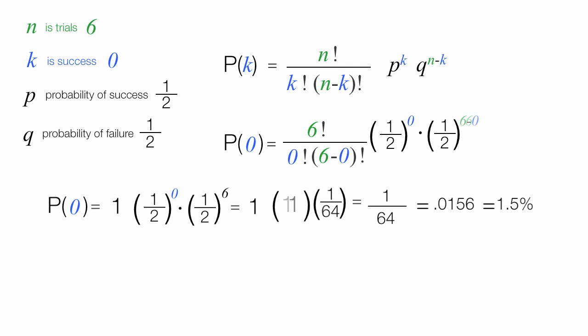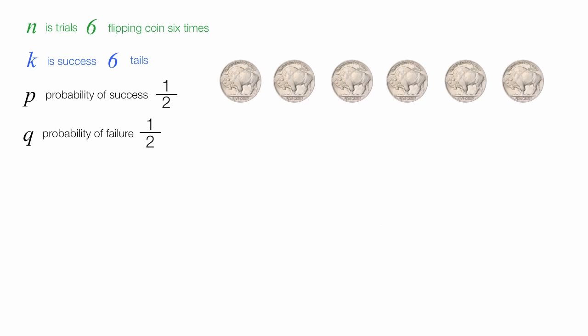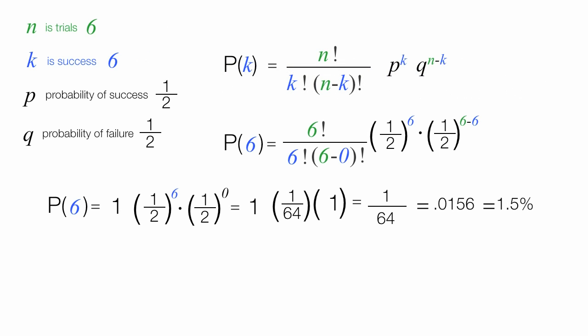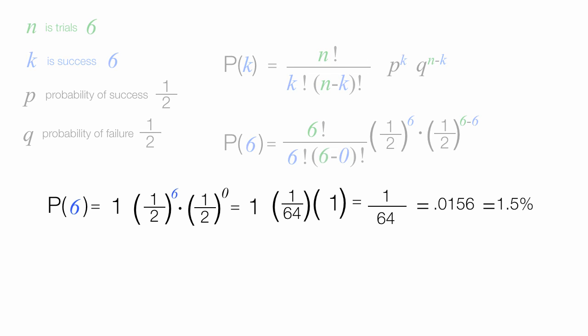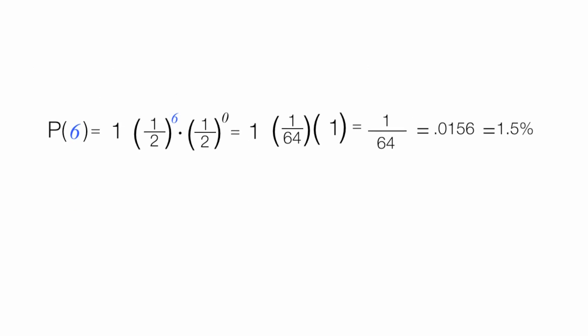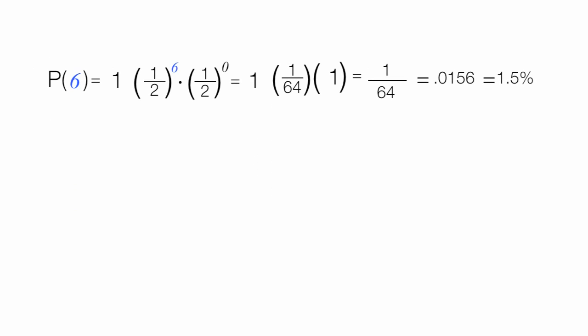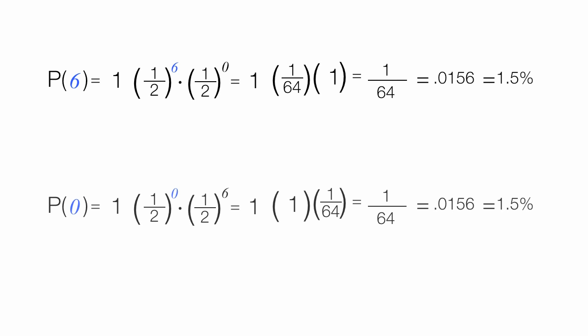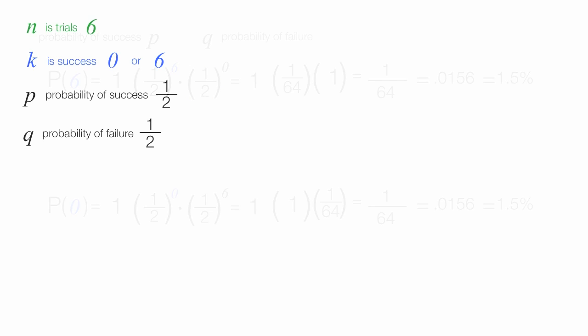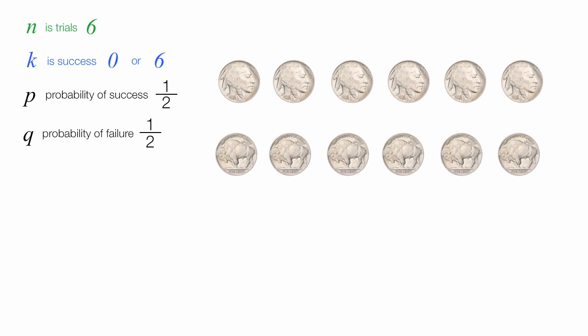What's the probability of flipping a coin six times and getting all tails? Well, it's going to be the same — 1.5%. The probability of getting six tails equals the probability of getting zero tails, and they're both equal to the same thing. This is true because the probability of success and failure are equal here — they're both one-half.